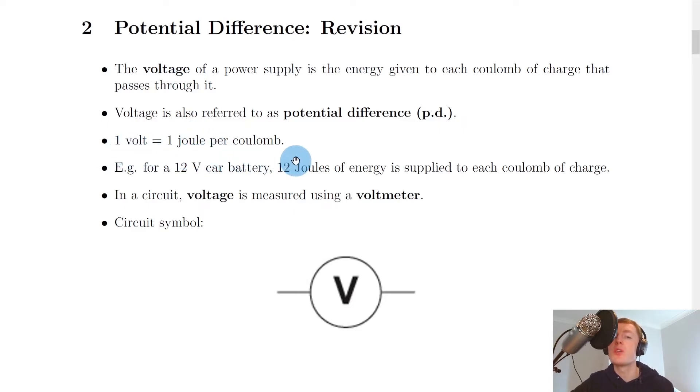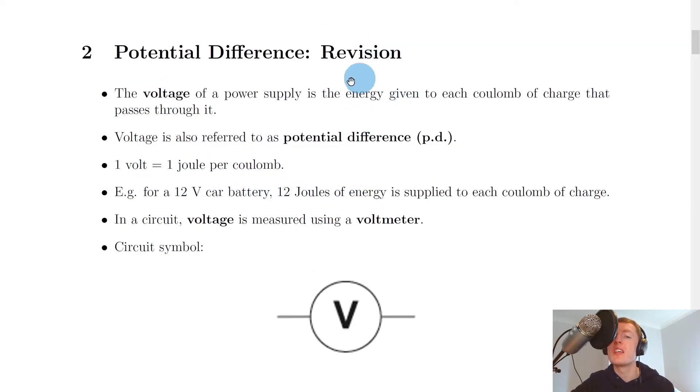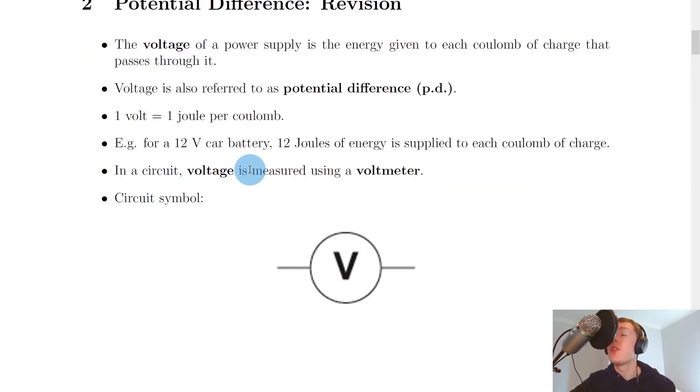Remember, we said the voltage of a power supply is the energy given (energy is measured in joules) to each coulomb of charge. So that is energy per coulomb. One volt is equal to one joule per coulomb.